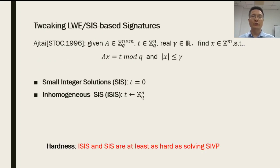The Small Integer Solution problem was first considered by Ajtai in 1996. This problem asks an algorithm, given a matrix A, a vector t, and a real gamma, to output a vector x such that A times x equals t and the norm of x is at most gamma. When t equals 0, this is the standard SIS problem. Otherwise, it is an inhomogeneous SIS problem if t is chosen uniformly at random. Both SIS and ISIS problems are provably as hard as some lattice problems such as the SIVP problem in the worst case.